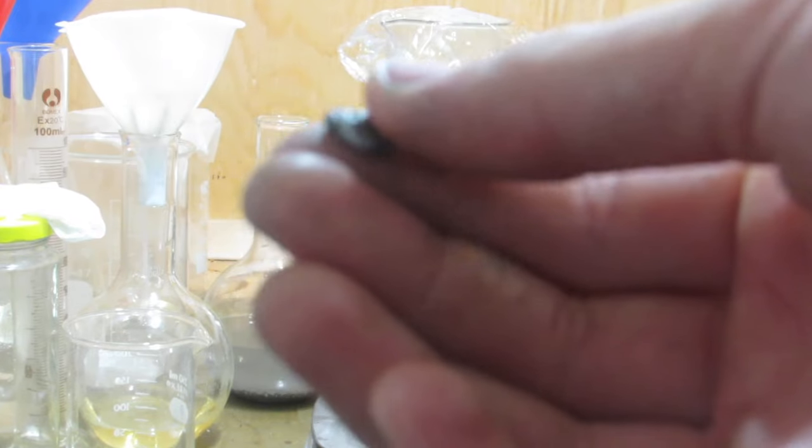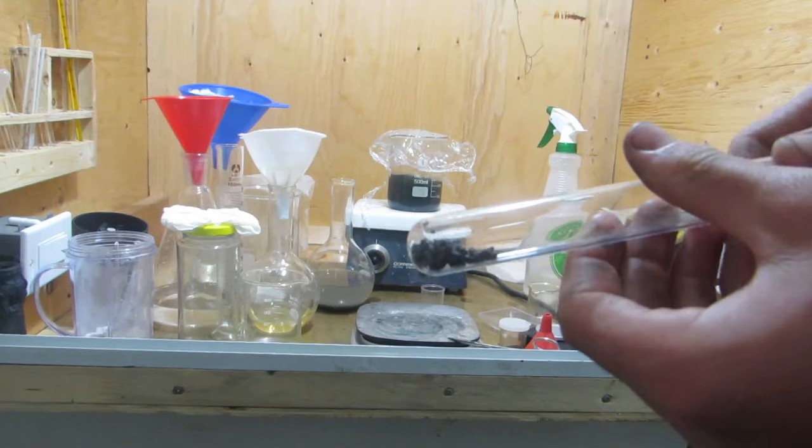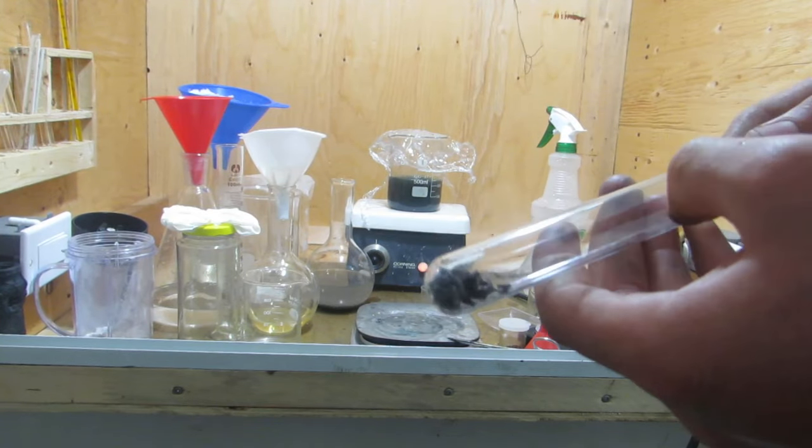Anyhow, that is essentially how to isolate yttrium metal from fluorescent phosphor. I hope you guys enjoyed, and I'll see you in a future video.